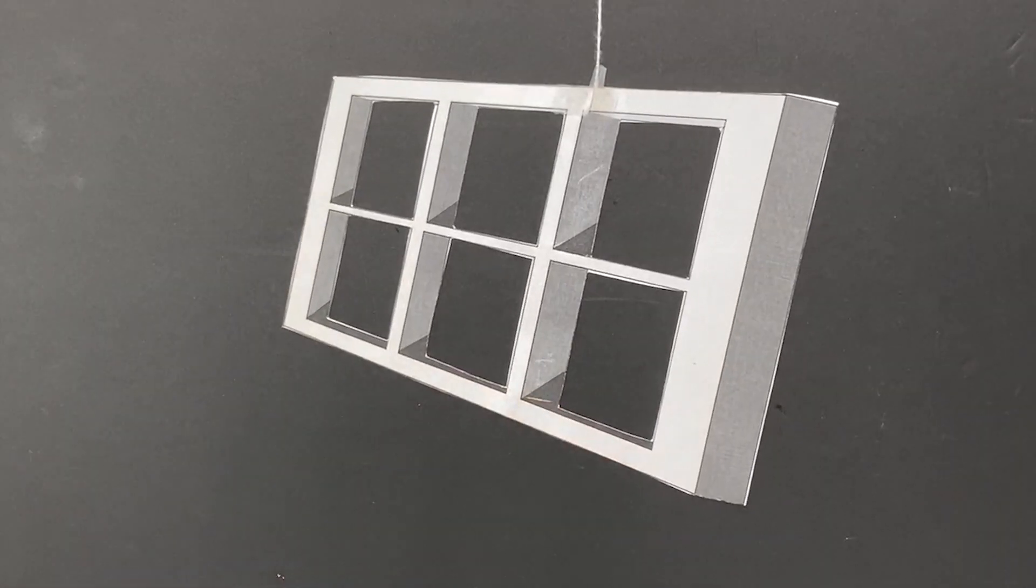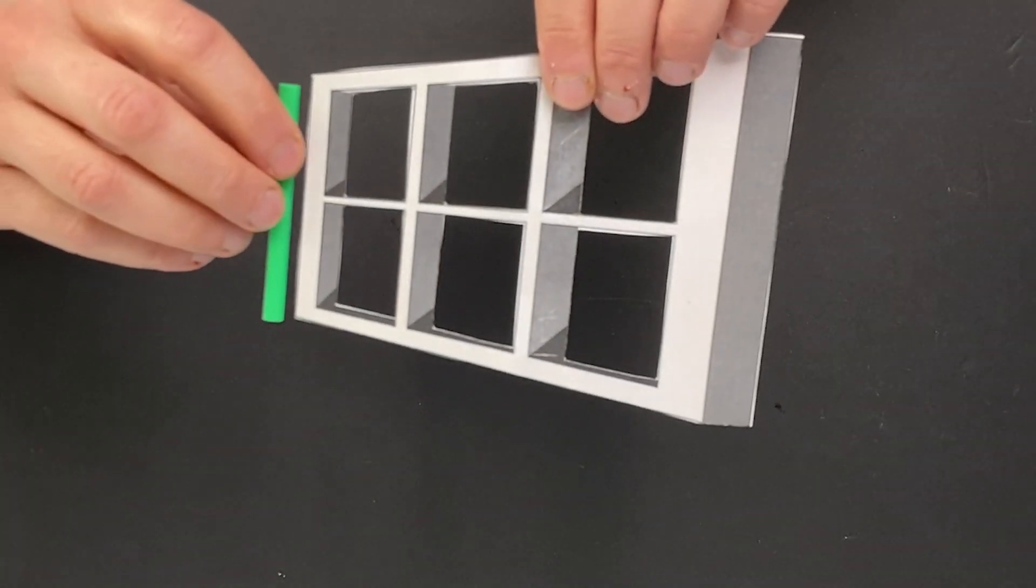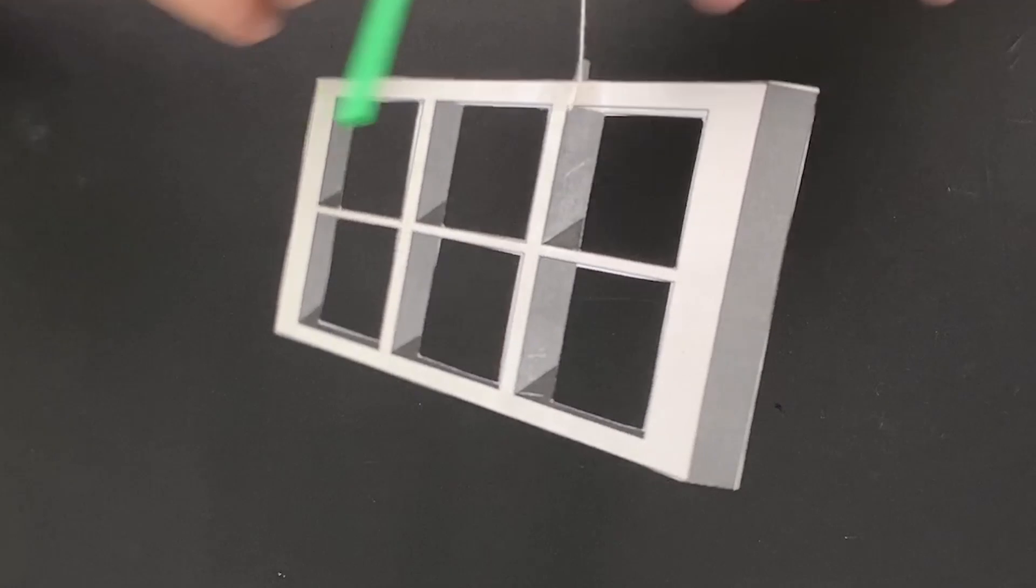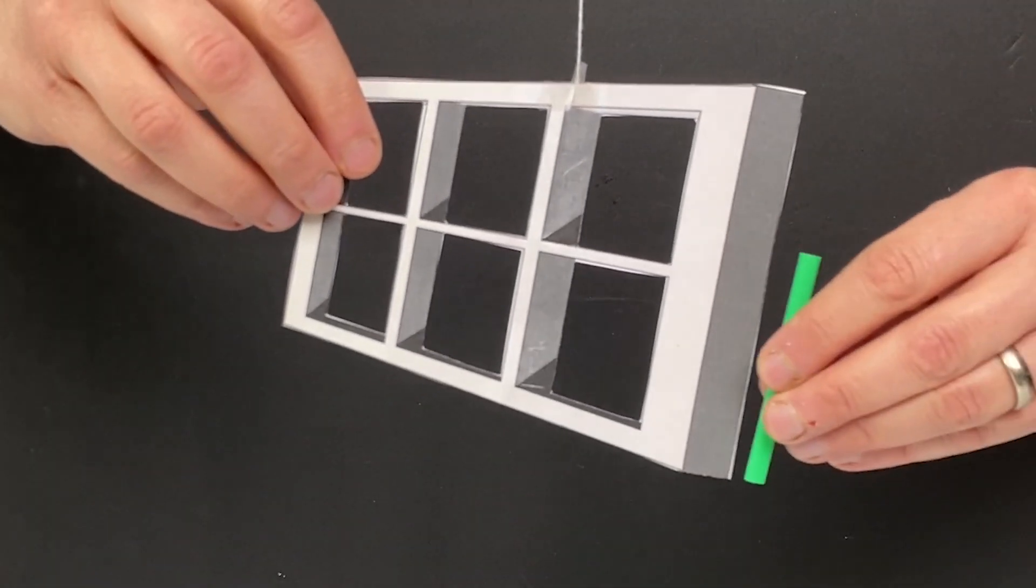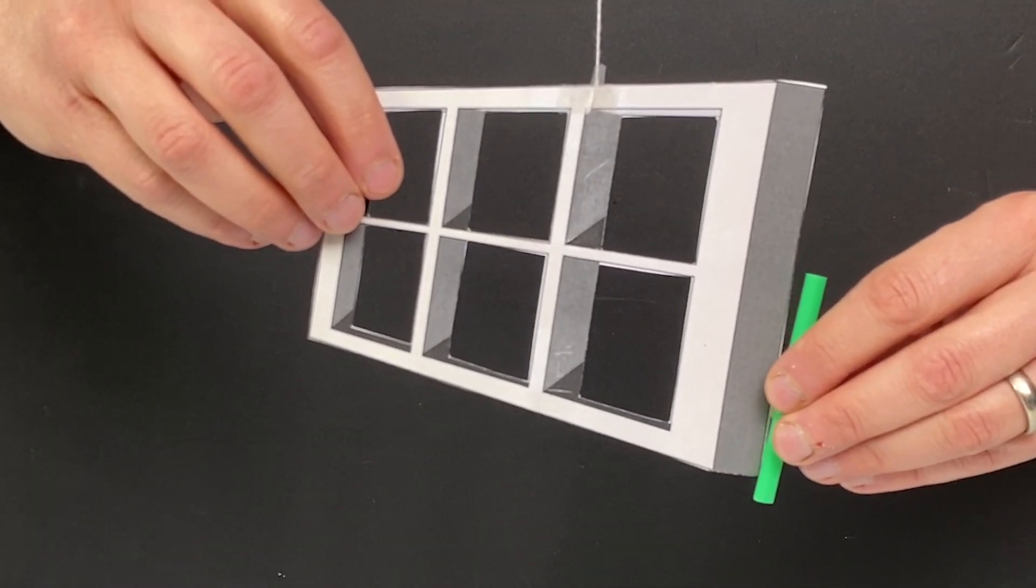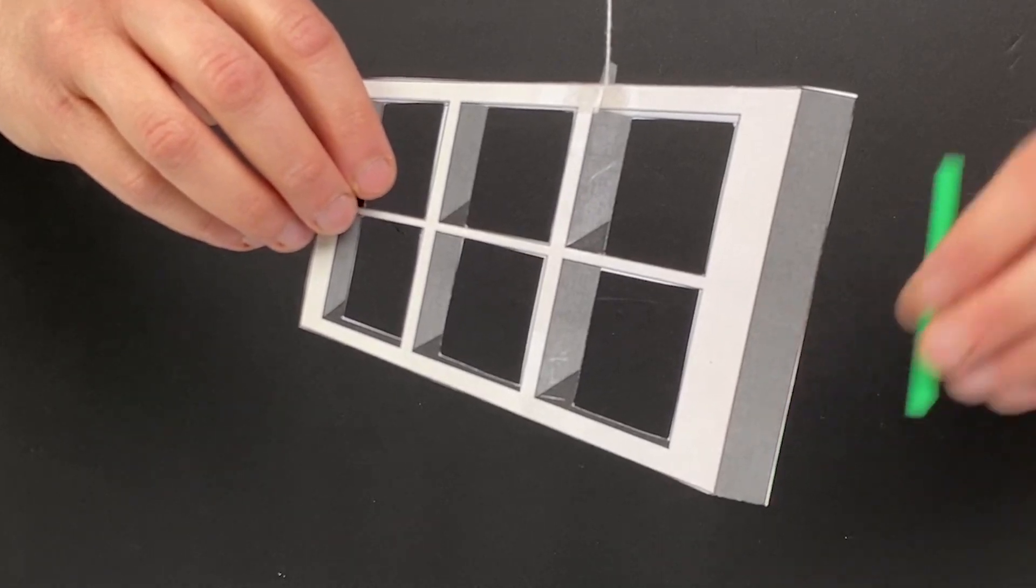And I can show you that they're not the same size. But this is about that length. And obviously the side is longer, right? So we have a trapezoid for a shape.